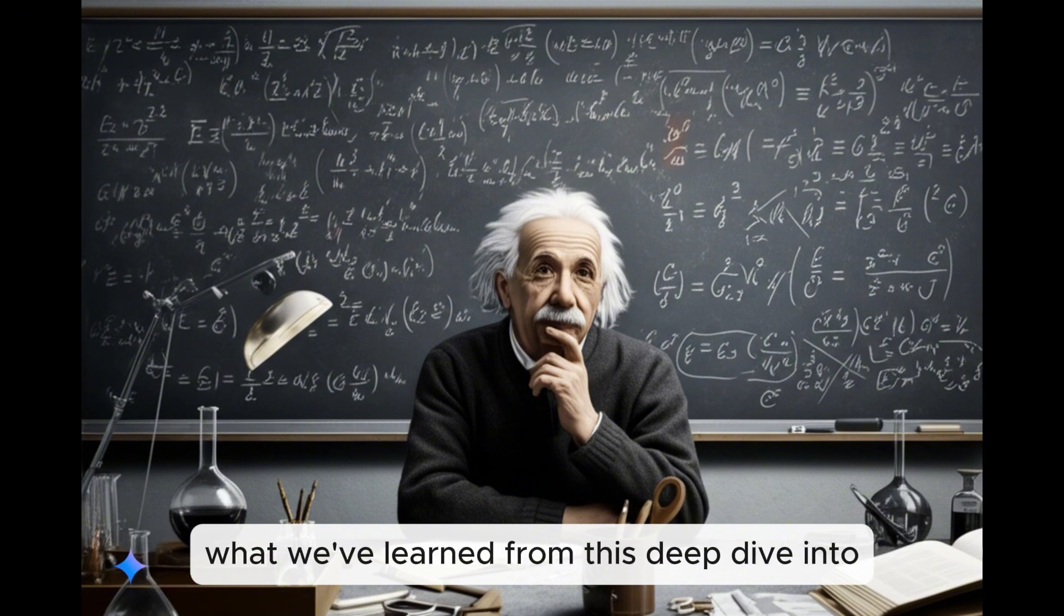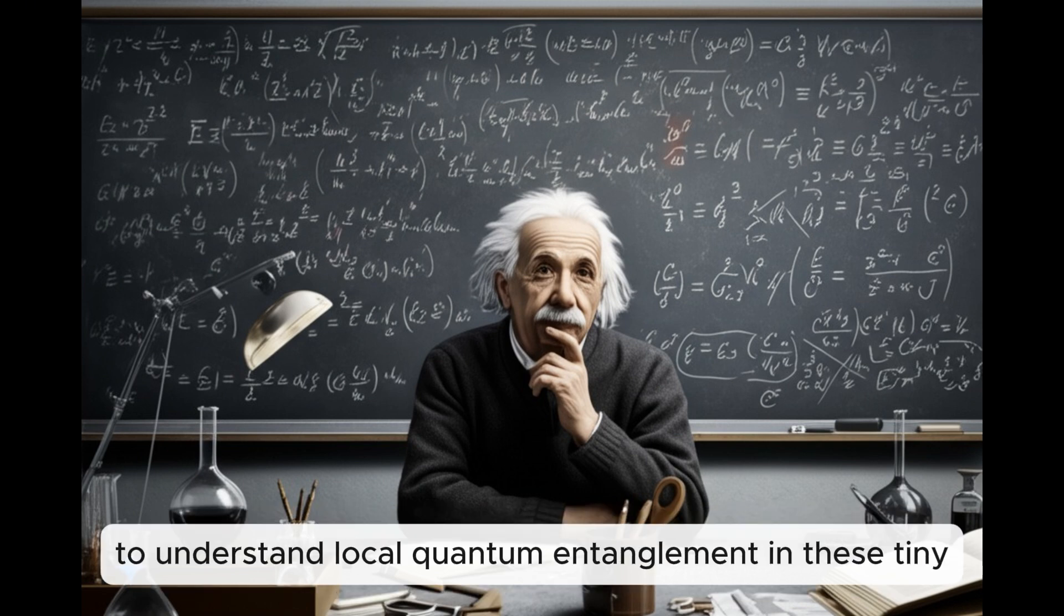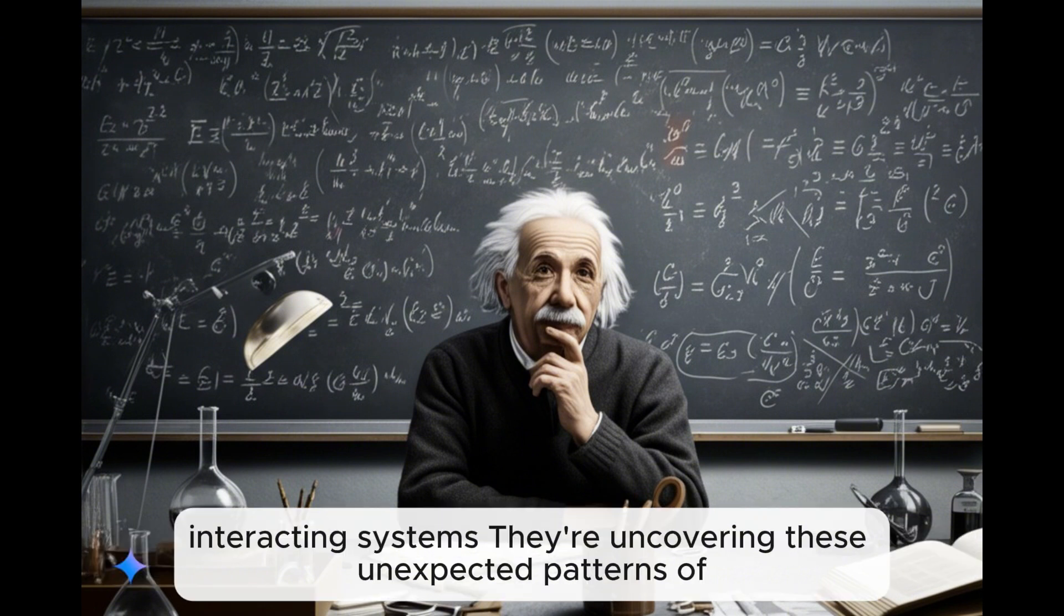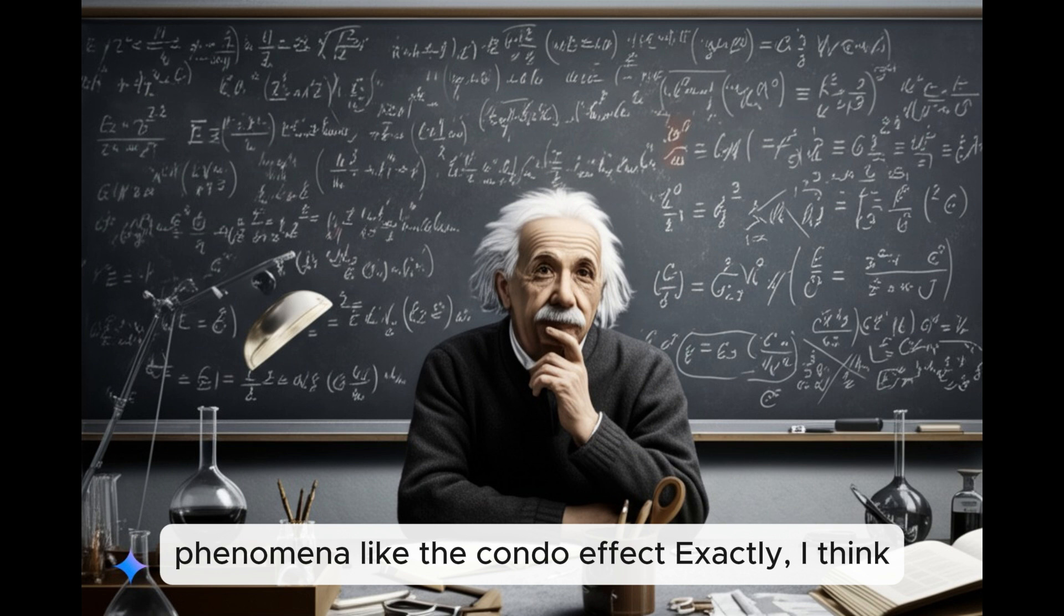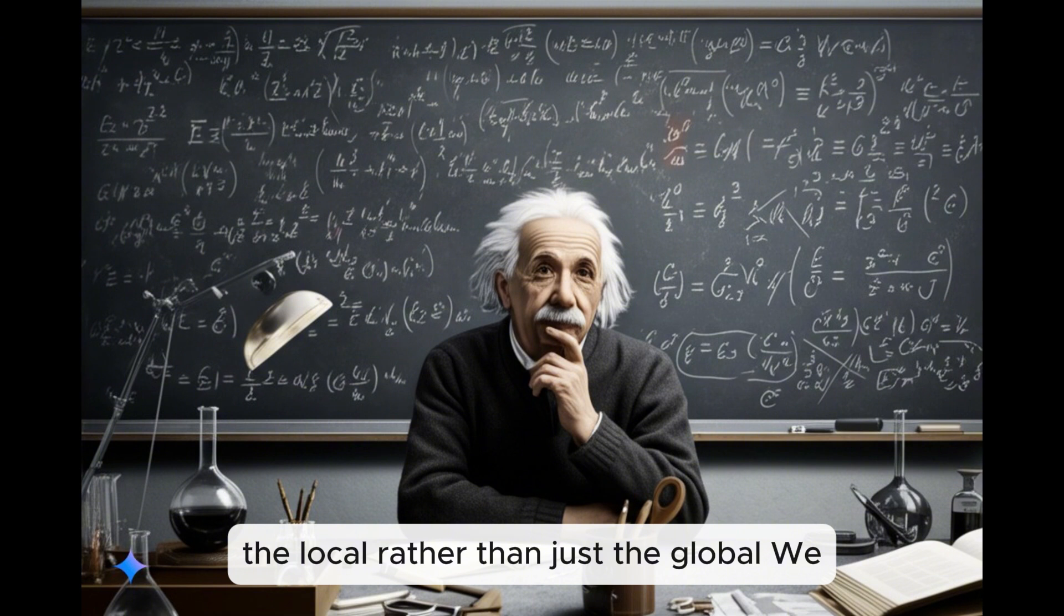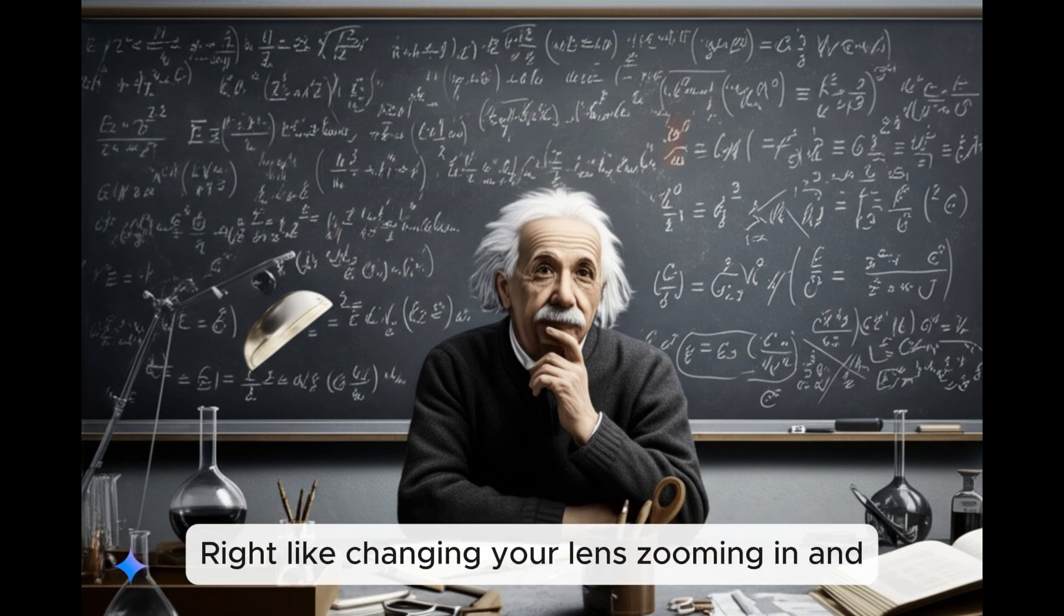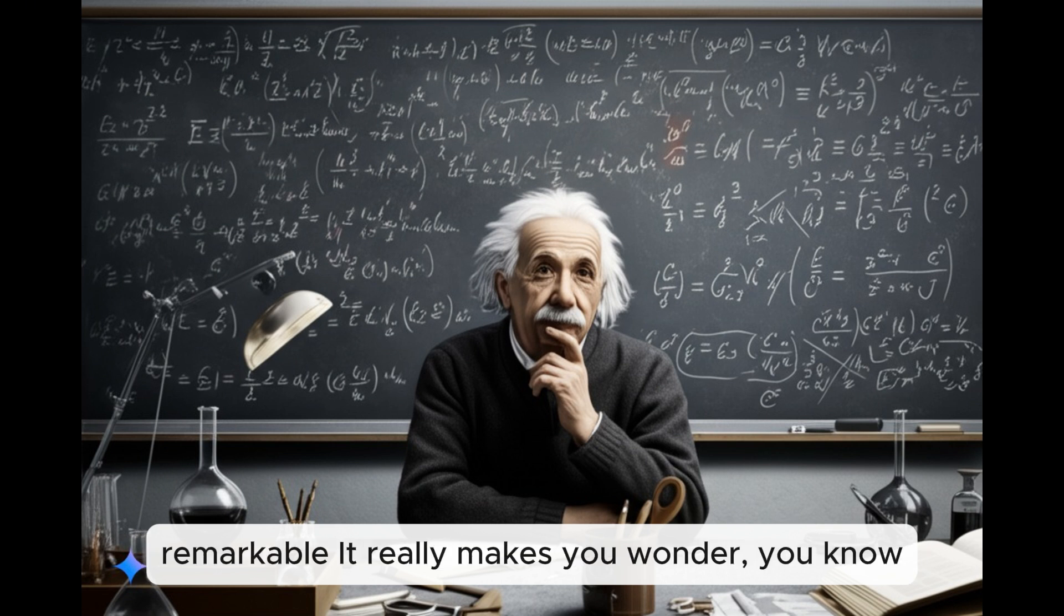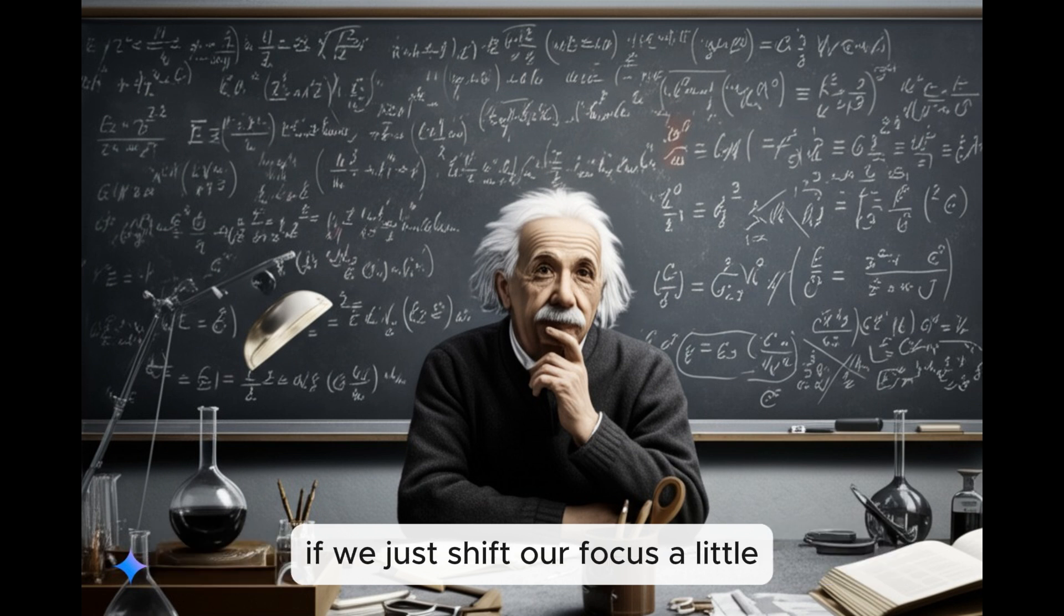So let's recap here, pull together what we've learned from this deep dive into the quantum realm. We've got these physicists in Japan who have developed these surprisingly simple formulas to understand local quantum entanglement in these tiny nanoscale materials. And by focusing on individual atoms and their immediate surroundings in these strongly interacting systems, they're uncovering these unexpected patterns of entanglement and gaining these crucial insights into complex phenomena like the Kondo effect. I think what's so cool about this is it highlights that by looking at the quantum world in a slightly different way, focusing on the local rather than just the global, we can get a fresh perspective.